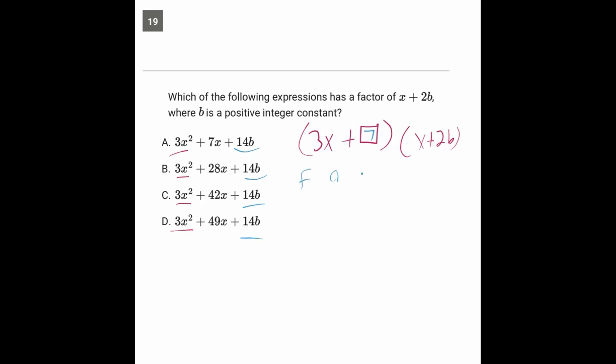So just imagine we're foiling this out. So now we'll have first times first, 3x squared, outer outer, that's going to be 3x times 2b, so 6bx, inner times inner, 7 times x, and last times last, which is 14b.